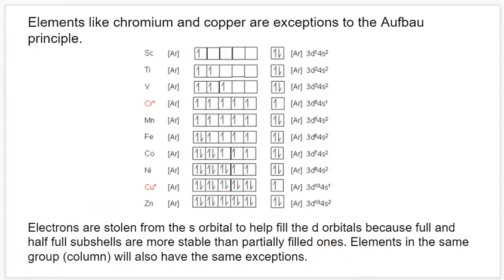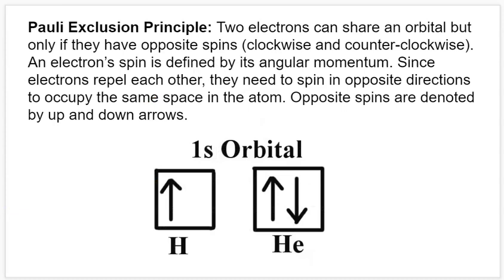Beyond the Aufbau principle, there are two other rules associated with how we fill out energy diagrams. The first is the Pauli exclusion principle, which says that two electrons sharing the same orbital must have opposite spin — either clockwise or counterclockwise. This is an abstract idea, but imagine two spinning electrons: two negative particles will repel each other. The way to minimize interference is through their magnetic fields — an electron spinning clockwise has a magnetic field pointing up, and one spinning counterclockwise has a field pointing down.